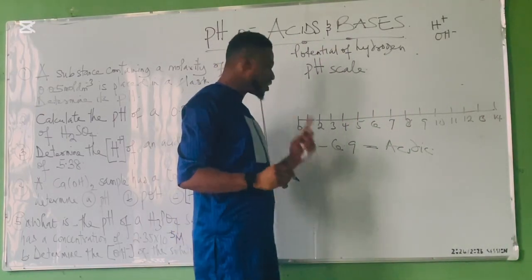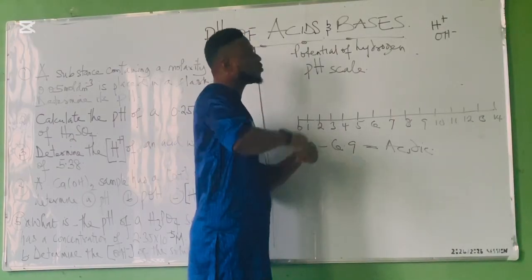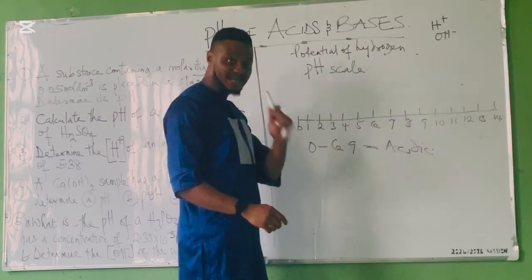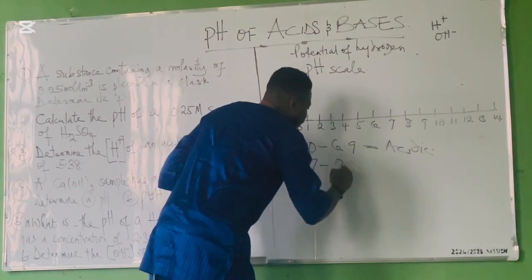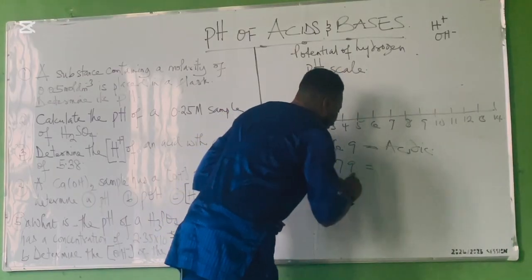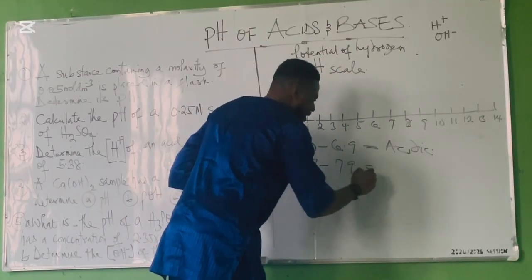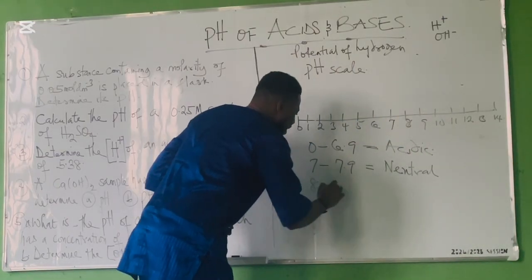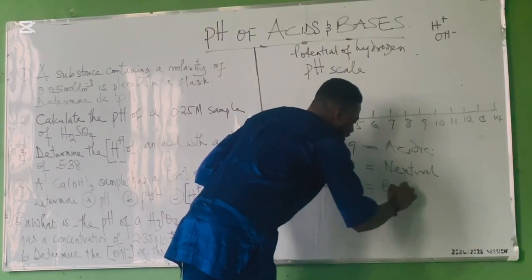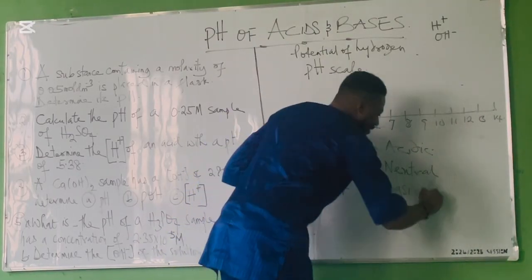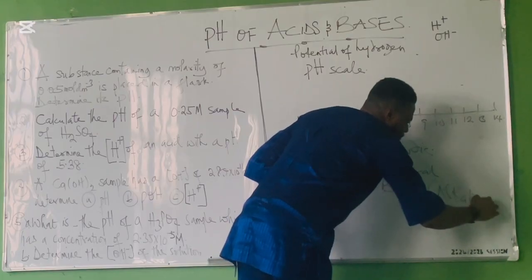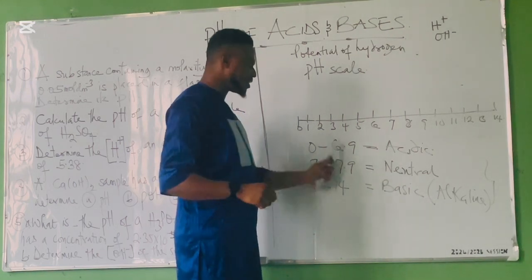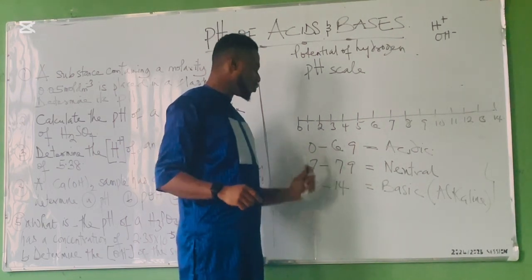Any substance that has a pH between 0 and 6.9 is an acid. A pH of 7 is neutral. From 7.1 to 14 is basic. Note that basic is also called alkaline. So it's important to note that these are the ranges for acidic, neutral, and basic.